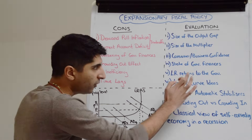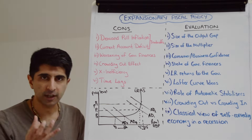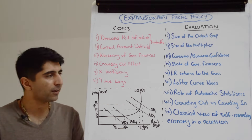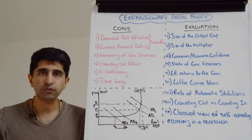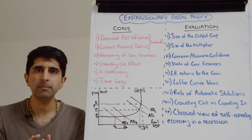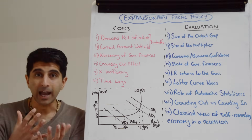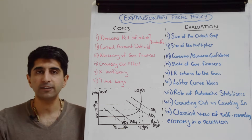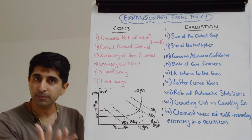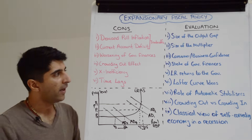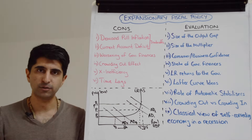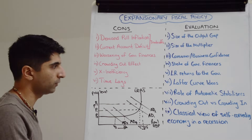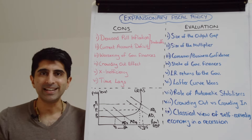We can also consider short-run versus long-run effects on government finances. Government spending on education, infrastructure, and healthcare can provide long-run economic growth and greater tax revenue returns to the government over time. Similarly, income tax cuts and corporation tax cuts generate long-term economic activity and tax returns. So while there may be higher debt in the short run, the long-run returns could outweigh that increase.